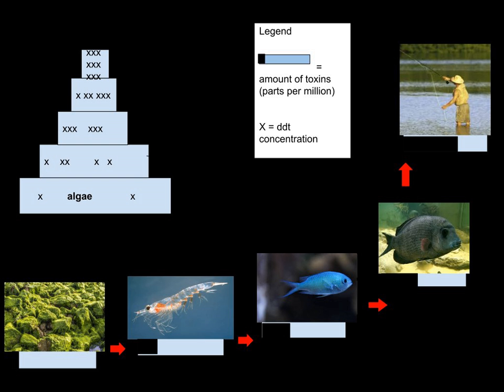Although sometimes used interchangeably with bioaccumulation, an important distinction is drawn between the two, and with bioconcentration. Bioaccumulation occurs within a trophic level, and is the increase in the concentration of a substance in certain tissues of organisms' bodies due to absorption from food and the environment. Bioconcentration is defined as occurring when uptake from the water is greater than excretion. Thus, bioconcentration and bioaccumulation occur within an organism, and biomagnification occurs across trophic levels.